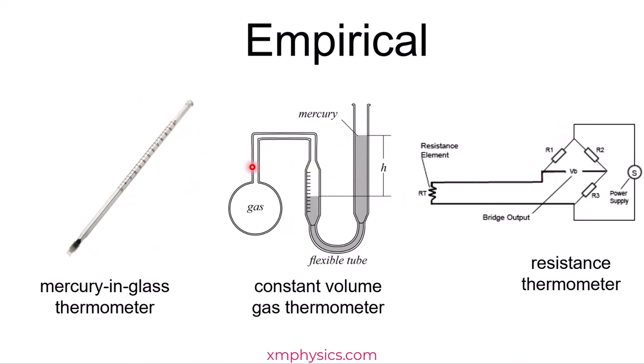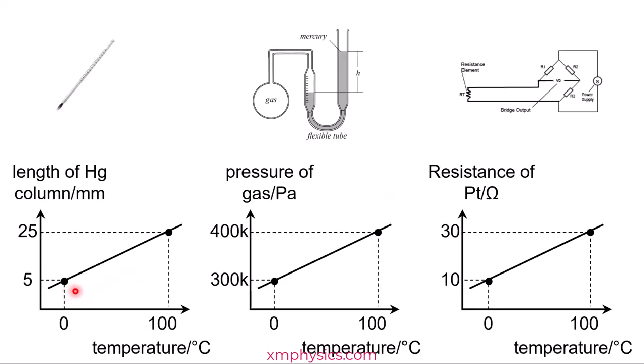And because of this, three thermometers built on three chosen properties may not even agree with one another. Well, they will definitely agree on the ice points and steam points because all of them are calibrated based on these two reference temperatures. But any other temperature, they need not agree.